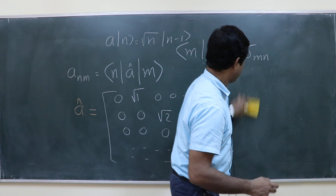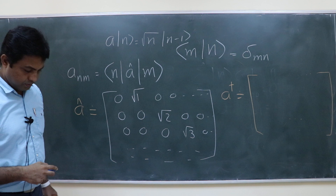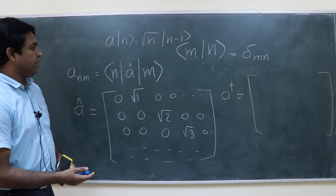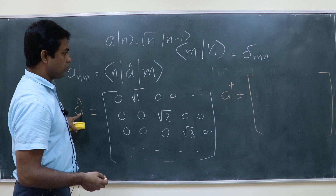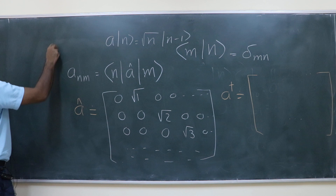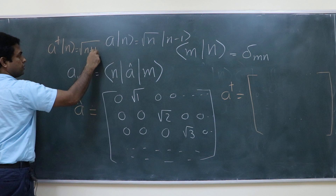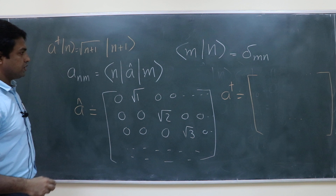Now let us look at the operator a dagger. Will it be the transpose of this matrix? Yes, because a dagger is the conjugate of operator a — basically the complex conjugate transpose in the matrix case. So root 1 moves here, and so on. You can also do the calculation directly using a dagger acting on ket n equals root n plus 1 ket n plus 1.